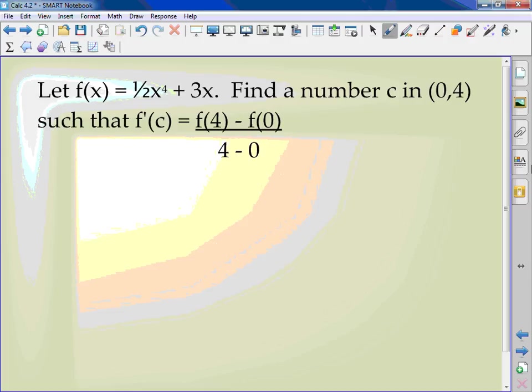We're going to let f(x) = ½x⁴ + 3x. Find a number c in (0,4) such that f'(c) equals f(4) - f(0) over 4 - 0.